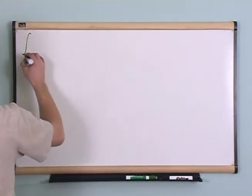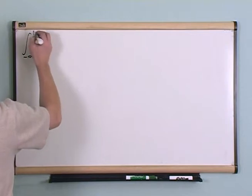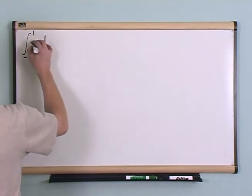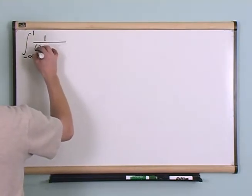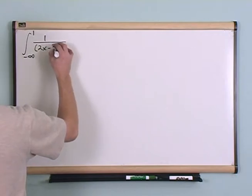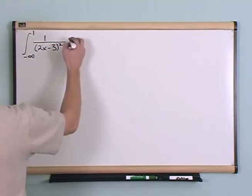So let's do one of those right now. What if you were integrating from negative infinity to one of the integral one over (2x minus 3) squared dx.